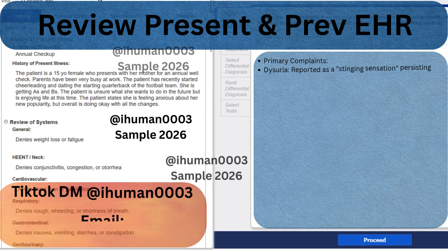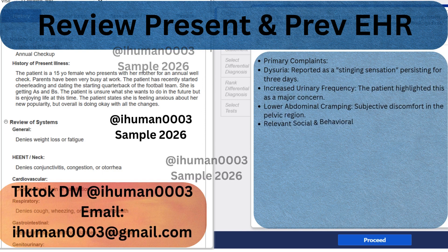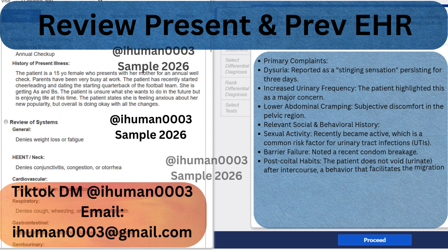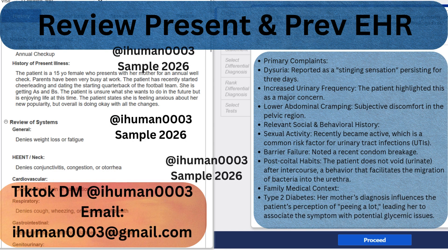The patient presents with a three-day history of dysuria, described as a stinging sensation, and increased urinary frequency. Subjectively, she's experiencing lower abdominal cramping. Key history points to remember: she recently became sexually active and noted a condom failure. She also admits to not voiding after intercourse. These are classic triggers for bacterial migration.